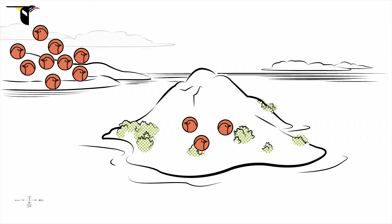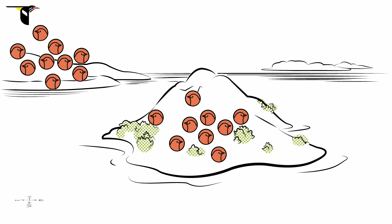If these birds move between the island and the mainland only rarely, the conditions for reproductive isolation are set and the brand new island population is on its way to becoming a new species. Over thousands of generations, the two populations will be shaped by natural and sexual selection into separate forms, each with a unique genetic fingerprint.